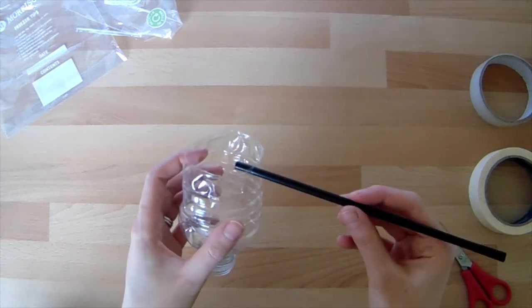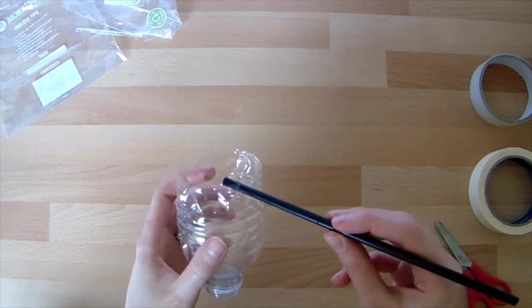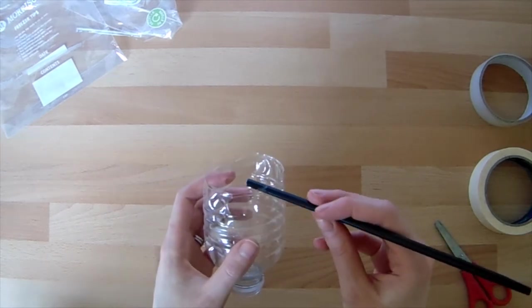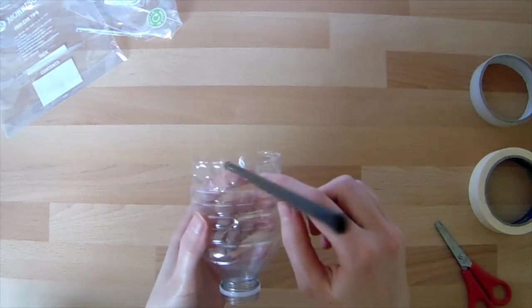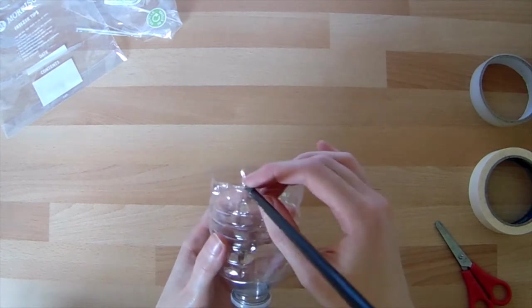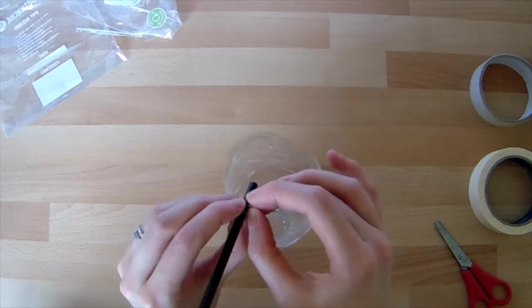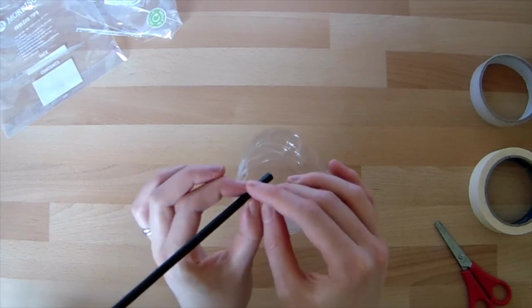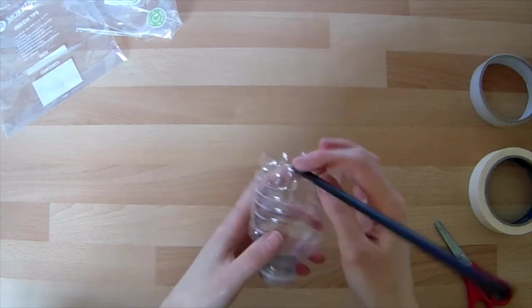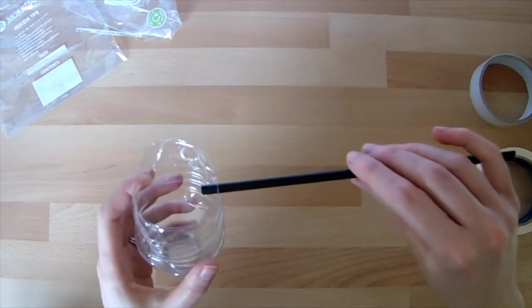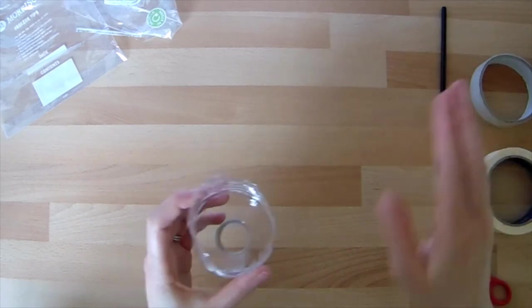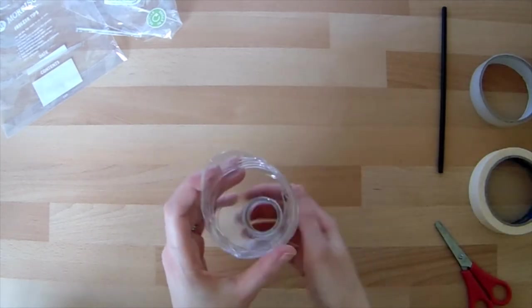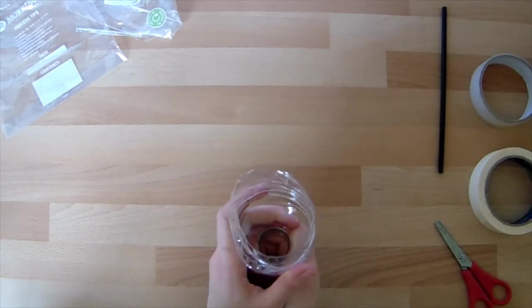If your straw isn't fitting, you might have to make the hole slightly bigger. If it's too small and there's lots of space around the outside, you might want to put some blue tack or play-doh around the outside to make sure that no air escapes. I'm going to take that out for now because we still need to put our membrane over the top. This is going to vibrate and give us the sound.